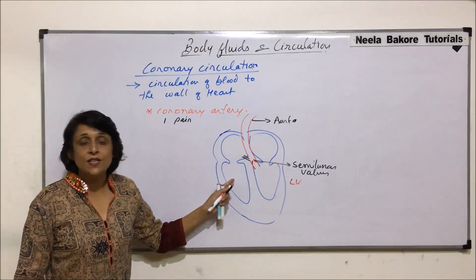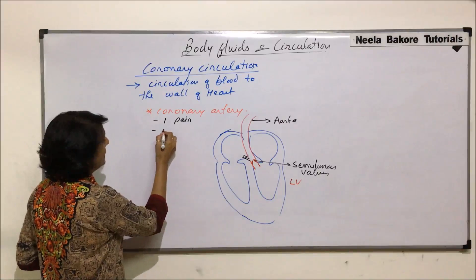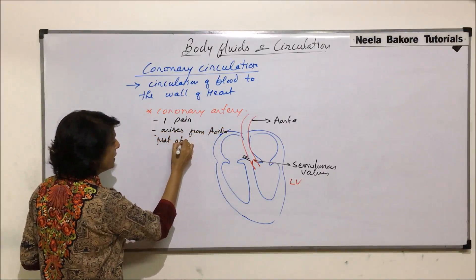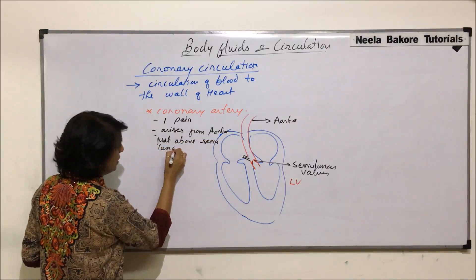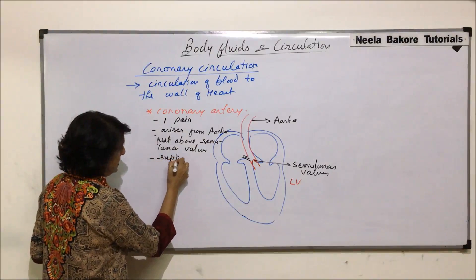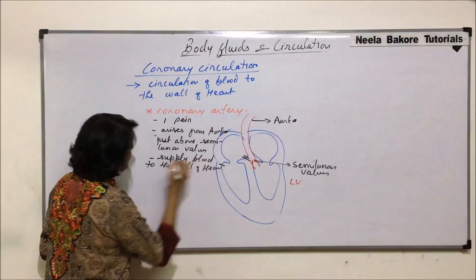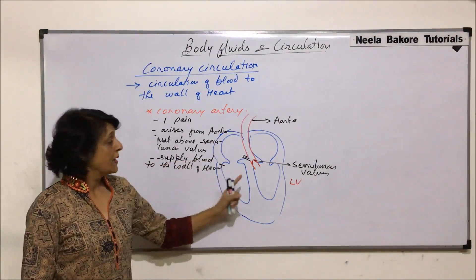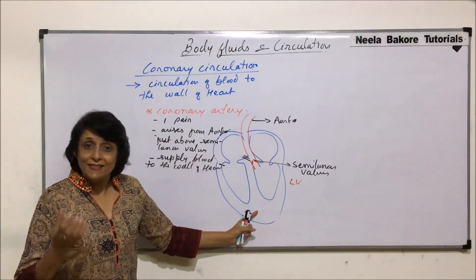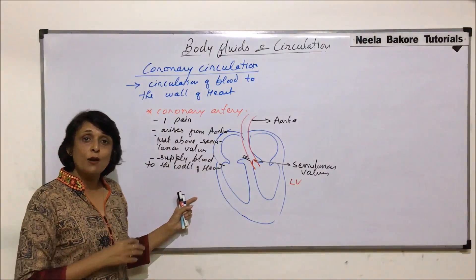These arteries divide into branches and these branches spread all over the wall of the heart. One pair of coronary arteries arises from the aorta just above the semilunar walls and they supply blood to the wall of the heart. The blood then becomes venous blood, carrying carbon dioxide and waste material that has to be brought back into the heart.